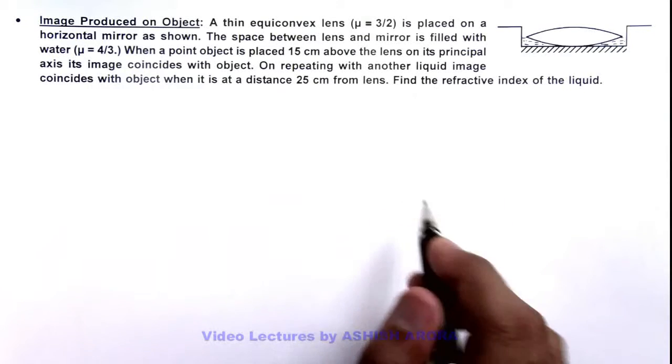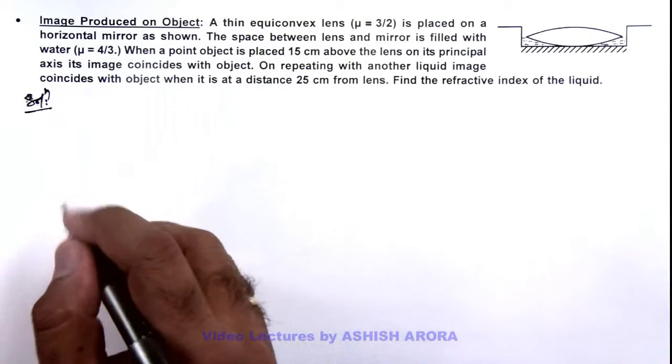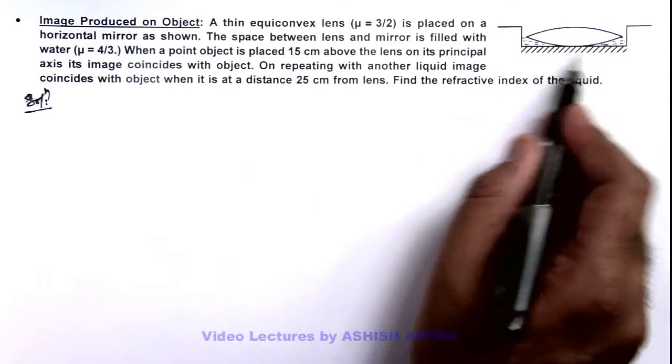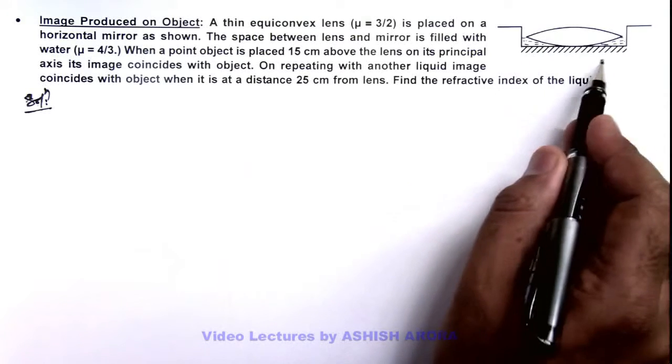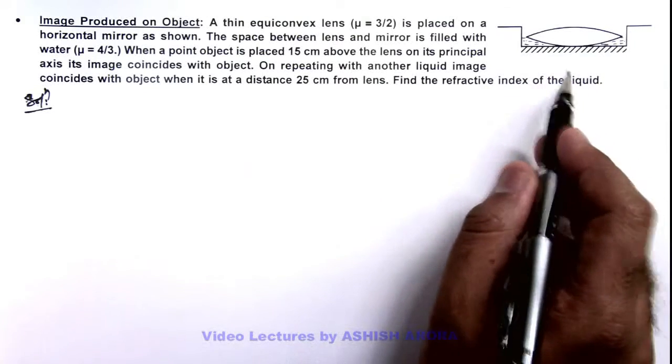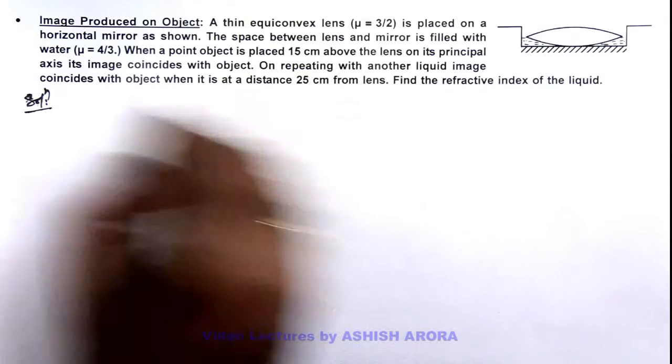Now in this situation here, we can see first when water is filled in it, this water lens can be considered as a plano-convex lens and these two lenses with the plane mirror can be considered as a single combination. So here if we consider r is the radius of curvature of this lens, so we can write: